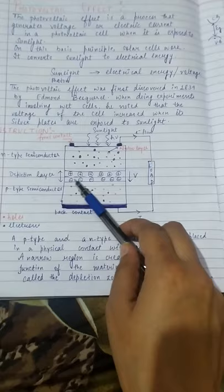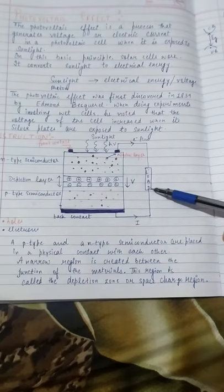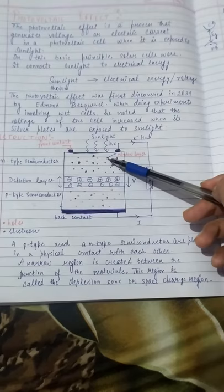Here you can see the depletion layer and the front contacts which are connected to the load resistance. You can have a load like an AC device or any device which will operate using solar energy. We use a P-N junction diode, where a photon with sufficient energy is used.